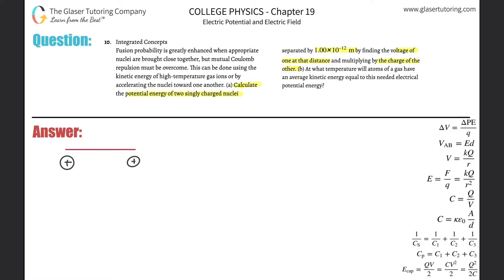We know the distance between them is 1×10⁻¹² meters. What we need to do first is find the potential energy by finding the voltage of one of them at that distance. So basically, let's take the perspective of this particular singly charged nucleus. If I have a point charge, then the voltage produced by this single point charge is going to be a function of the radius or the distance away from that point charge.